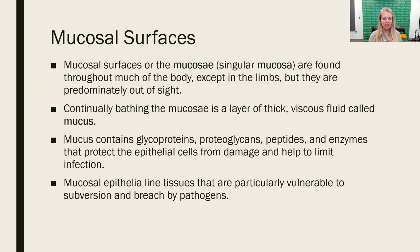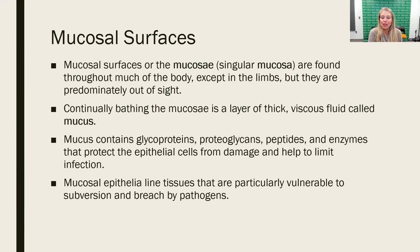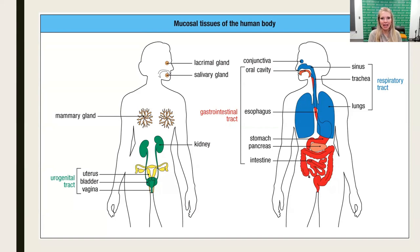Mucosal epithelial tissues are particularly vulnerable when pathogens are able to breach not only the mucus but also the epithelial layer and get down into the tissues. We have openings all over the body, especially in the head — nose, ears, mouth, eyes — and pathogens try to get into the body through those accessible openings. Here's a diagram of where mucosal tissues are located.